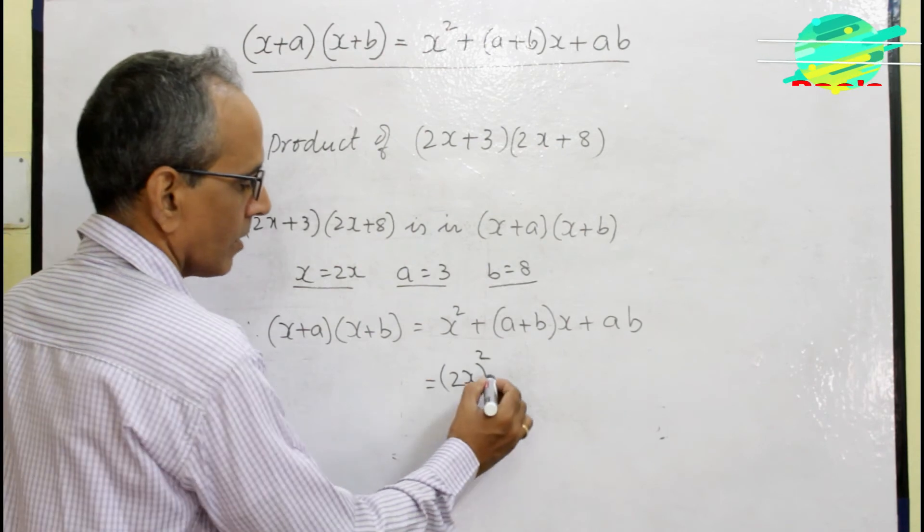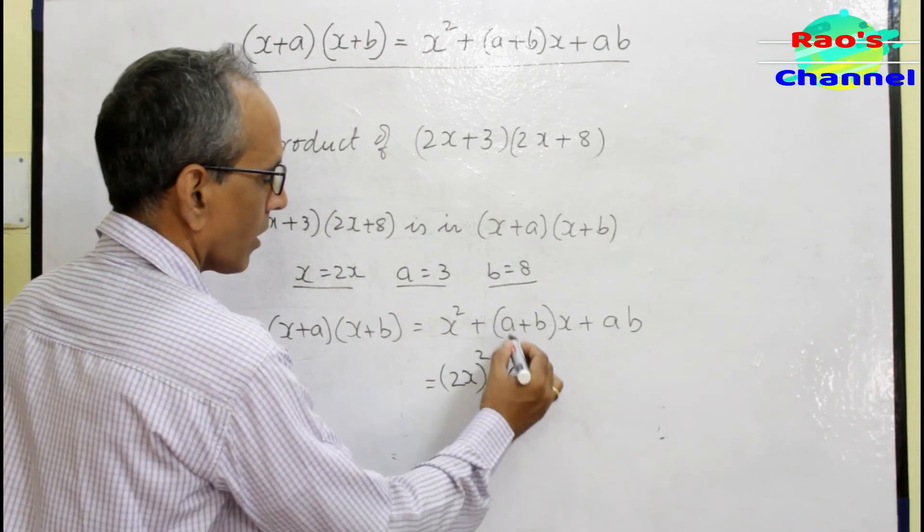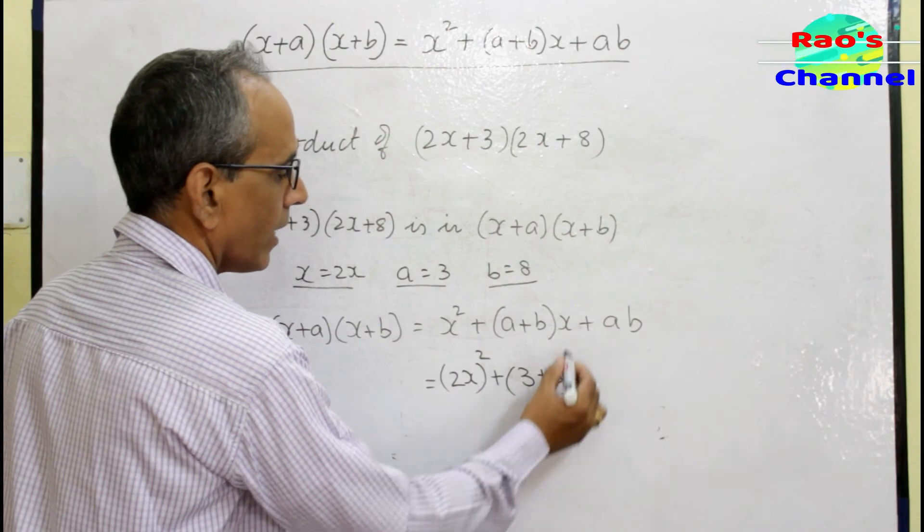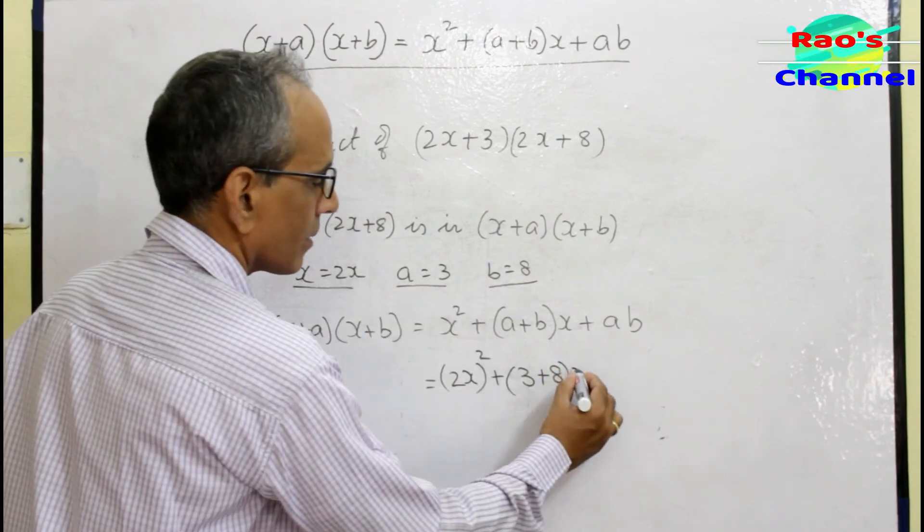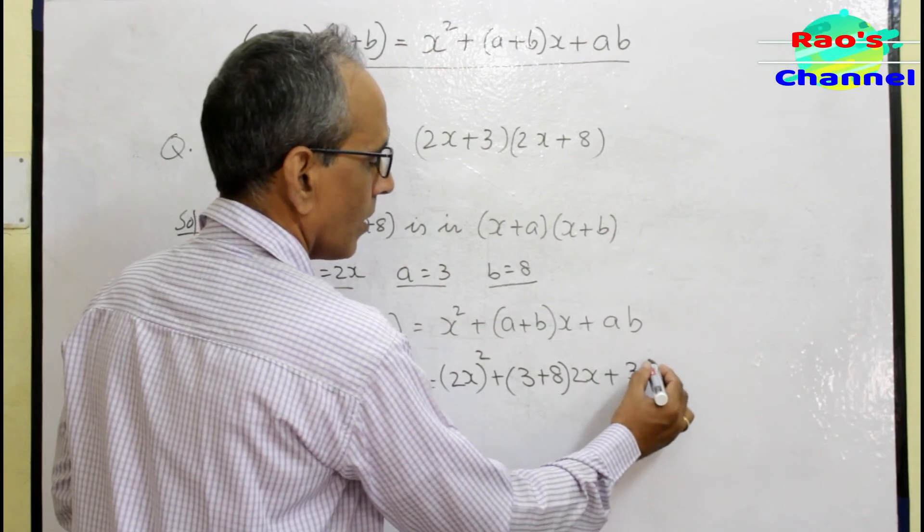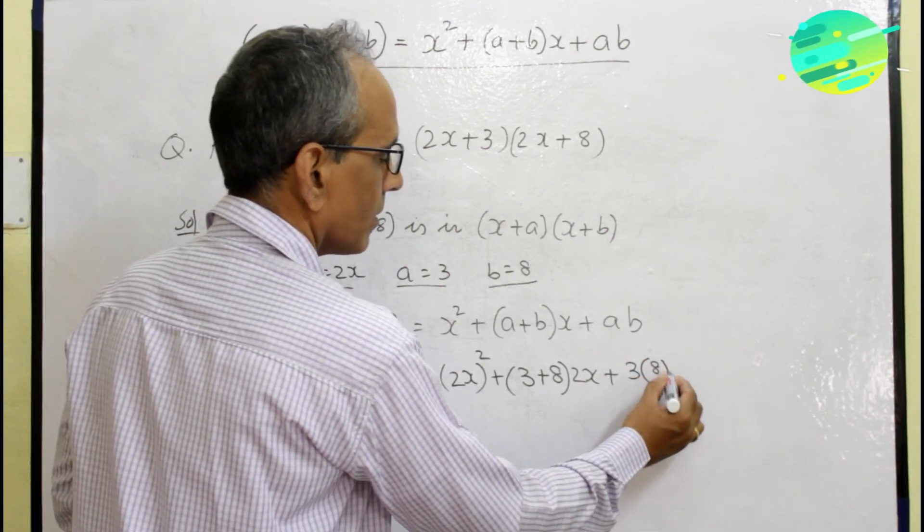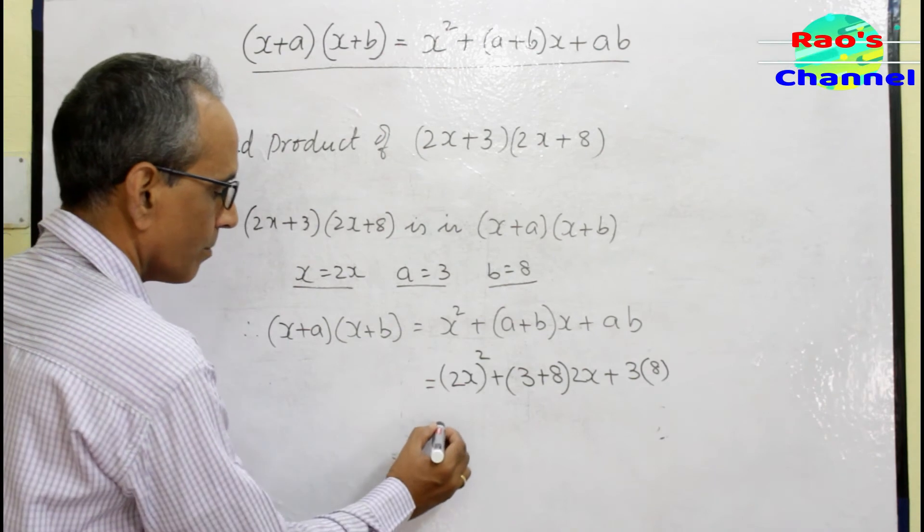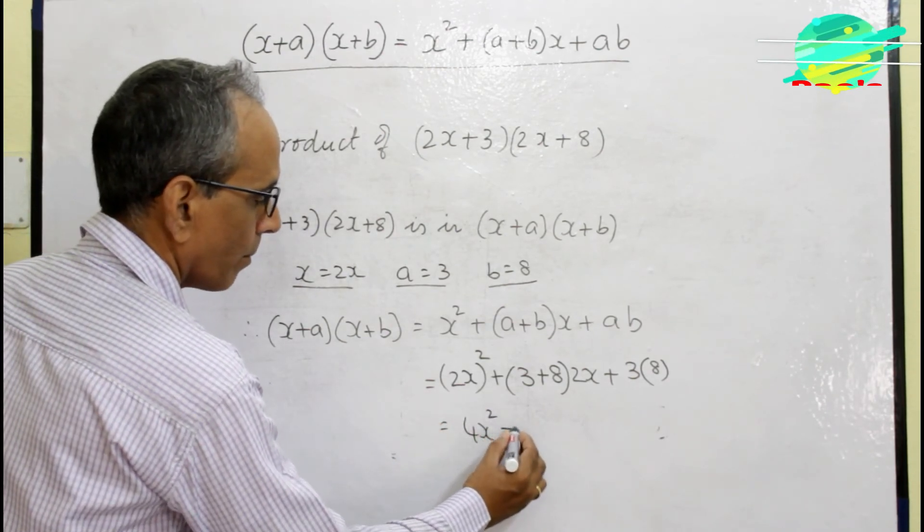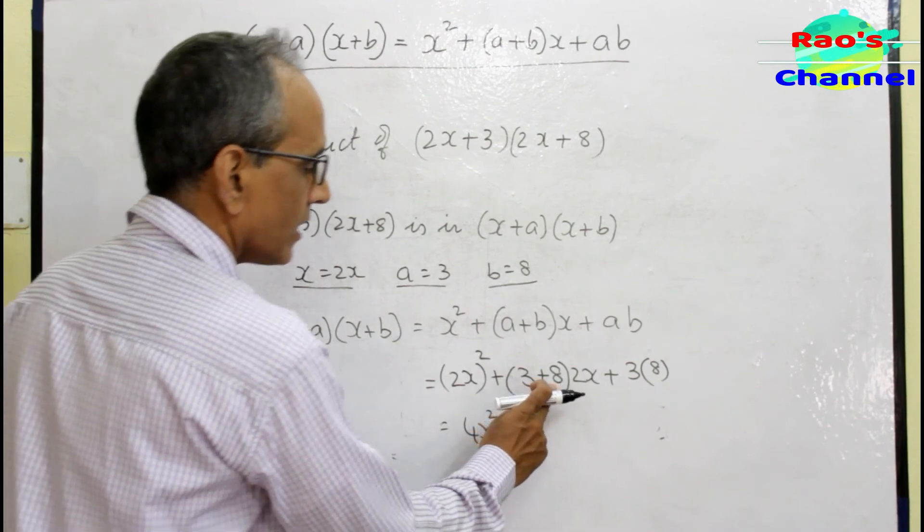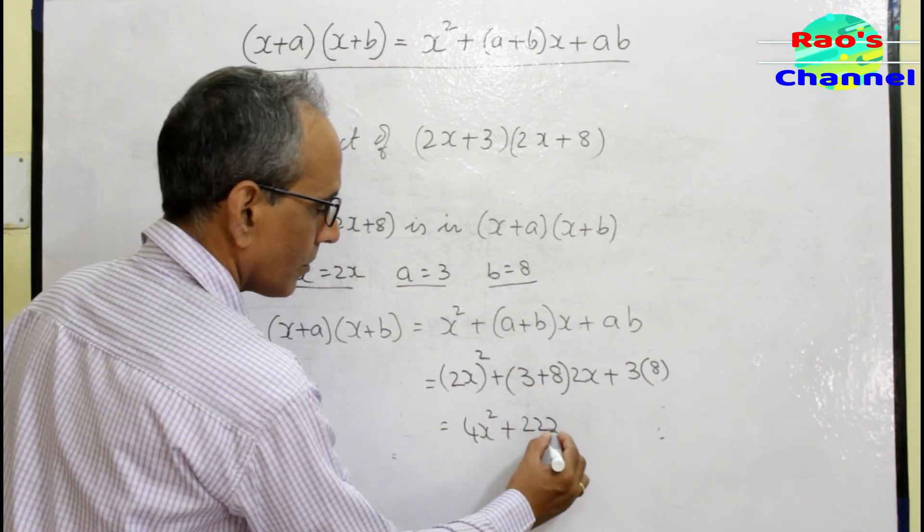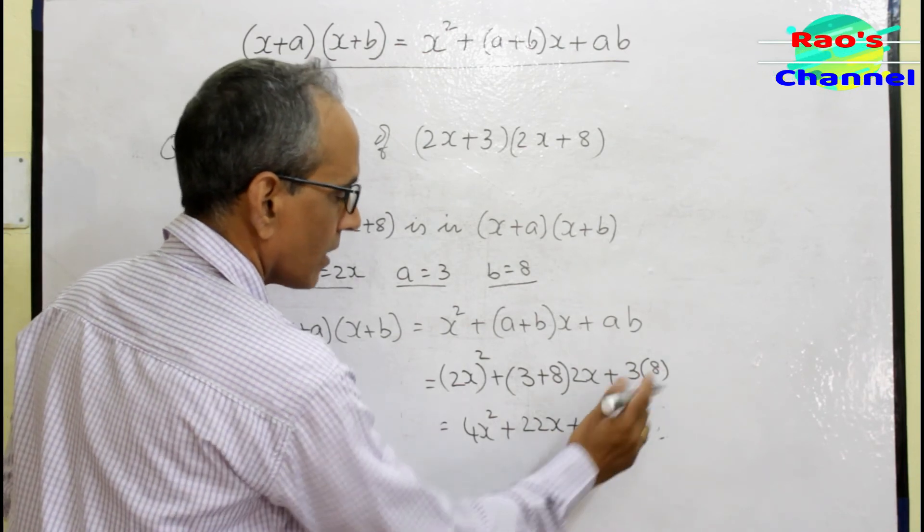Plus a is 3 and b is 8, and again x is 2x, plus a is 3 times b is 8. Let me complete finally: this is 4x² plus (3+8=11), 11×2x = 22x, plus 3×8 = 24.